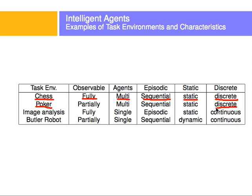Poker is similar — it's discrete because there are only so many cards, static because when a player takes a turn others aren't changing their cards, and sequential because the previous moves of other players matter. It can be multi-agent. However, poker's observability is interesting: it's partially observable because a player only knows their own hand. You can estimate probabilities given the sequence observed, but you cannot know other players' hands for sure. In chess, all players see the same board; in poker, you only see your own cards.